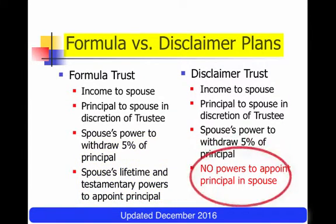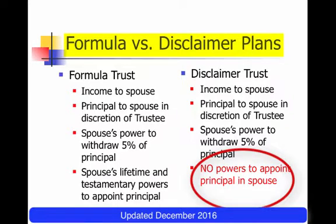That power can even be exercised through the terms of her will. When it comes to the disclaimer trust, however, once a person disclaims property and if a tax goal is the purpose of that disclaimer, then the person who is disclaiming the property can have no ability to determine who receives the property. That means the disclaimer trust cannot give the surviving spouse the power to appoint principal — that's a big difference.